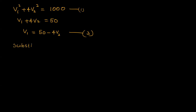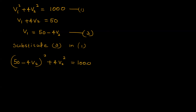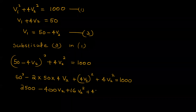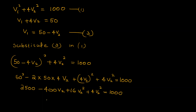Substituting equation 3 into equation 1: (50 minus 4 V2) squared plus 4 V2 squared equals 1000. Expanding using (A minus B) squared: 2500 minus 400 V2 plus 16 V2 squared plus 4 V2 squared equals 1000. This simplifies to 20 V2 squared minus 400 V2 plus 2500 minus 1000 equals 0.